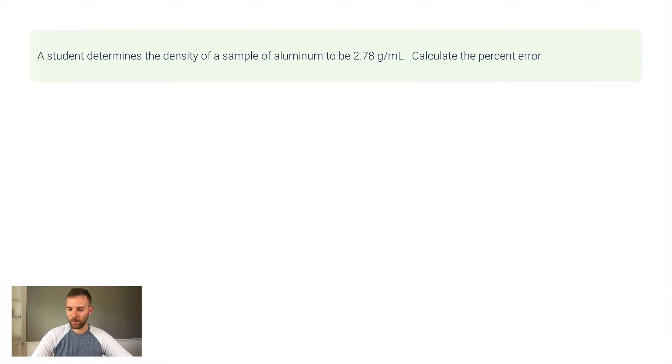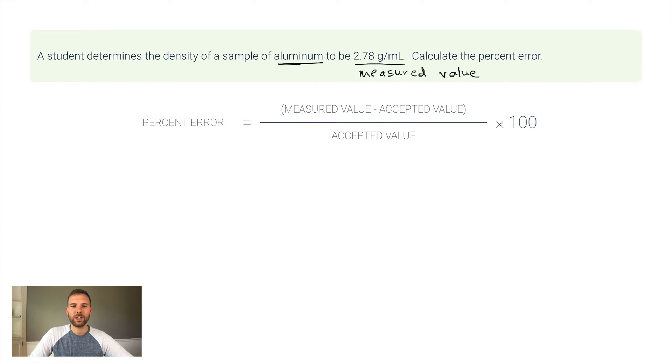Let's look at an example problem. A student determines the density of a sample of aluminum—this is important, the fact that it's aluminum—to be 2.78 grams per milliliter. This is their measured value, what they got experimentally. Our job is to determine the percent error.